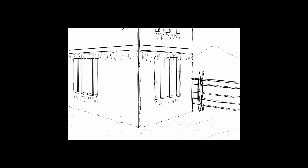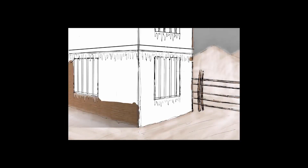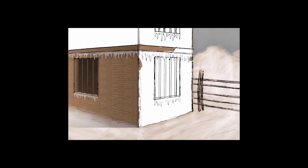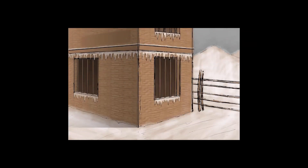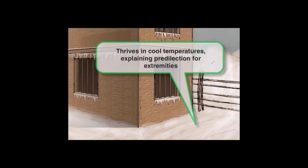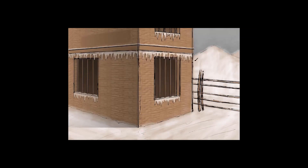Let's start with some general characteristics. You'll notice that there's snow on the ground and icicles on the buildings because our scene is taking place in wintertime. The reason we have it taking place in winter is because leprae thrives in cool temperatures, and you'll see later this gives it a predilection for the extremities of the body, but we'll talk more about that when we talk about clinical presentation.